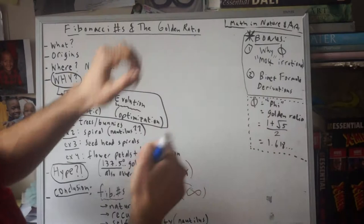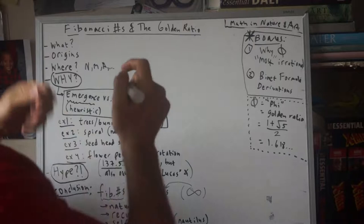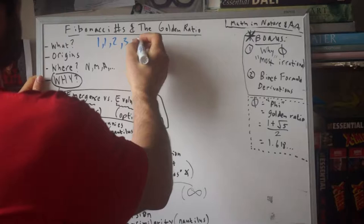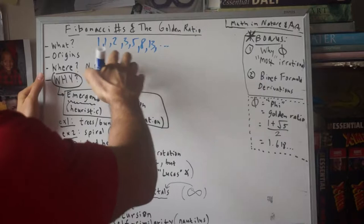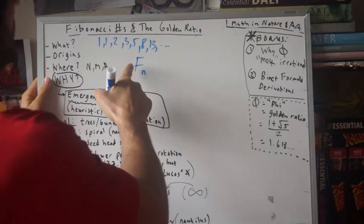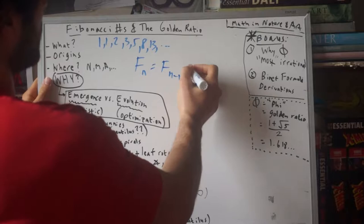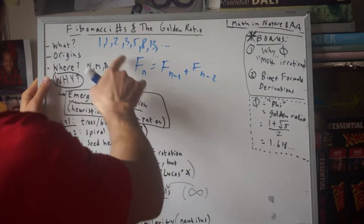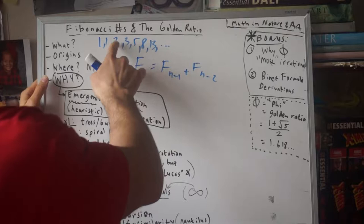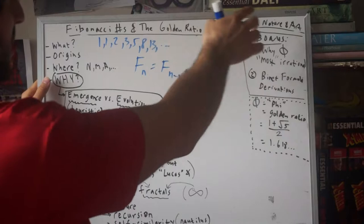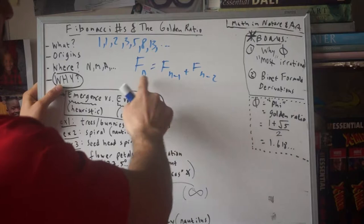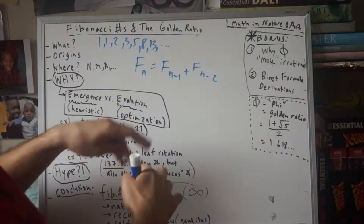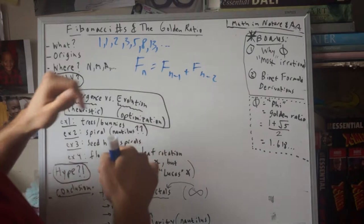So let's get into it. Fibonacci numbers — many of you have heard of them. They are the series: 1, 1, 2, 3, 5, 8, 13, and so forth. This is what's known as a recurrence relation, abbreviated F(n). To get the nth term, you sum the previous two terms — so 1+1=2, 2+3=5, 3+5=8, 5+8=13, and so forth.